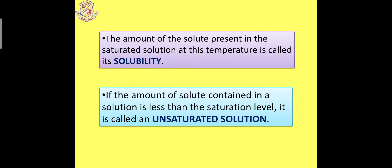The amount of solute present in the saturated solution at a particular temperature is known as solubility. Whatever amount of solute — 1 teaspoon, 5 grams, 10 grams, 20 grams — dissolves at that particular temperature is the solubility at that temperature. If the amount of solute contained in a solution is less than the saturated level, it is called an unsaturated solution — a condition where more solute can still be added at a given temperature.